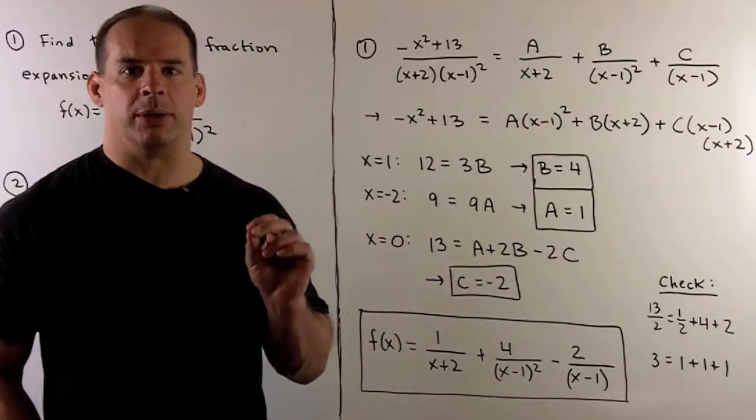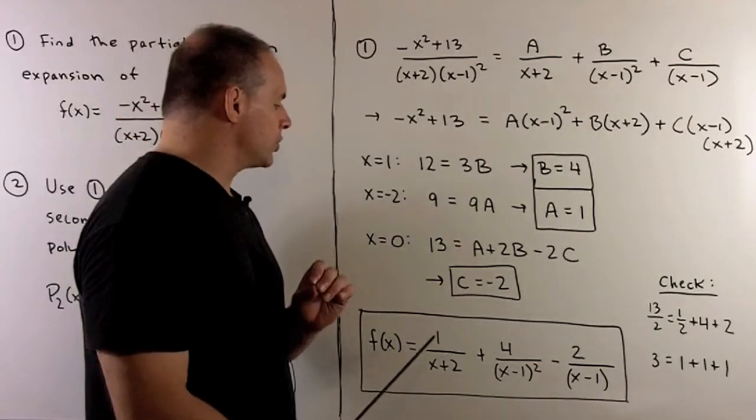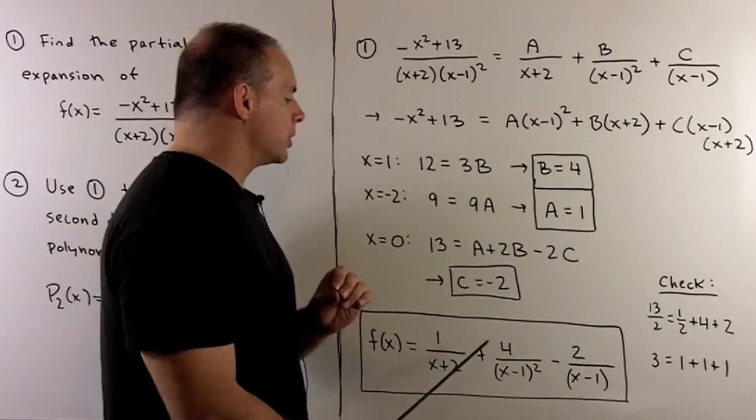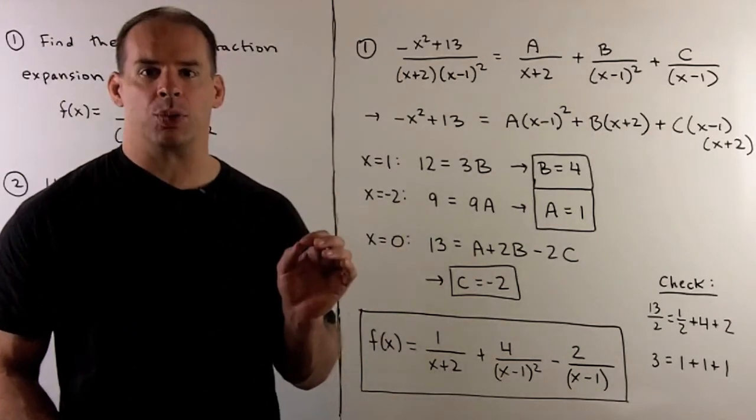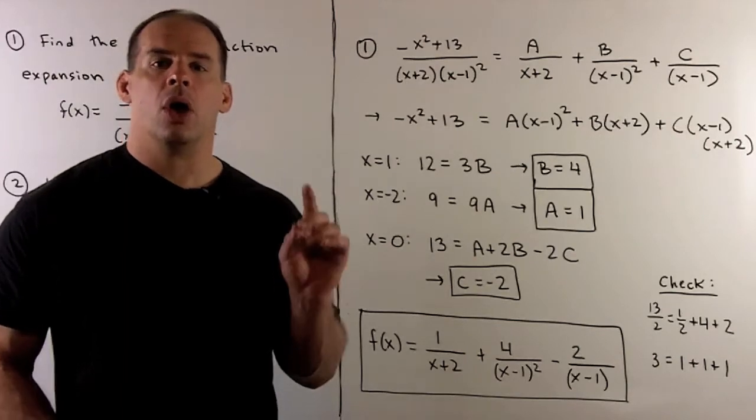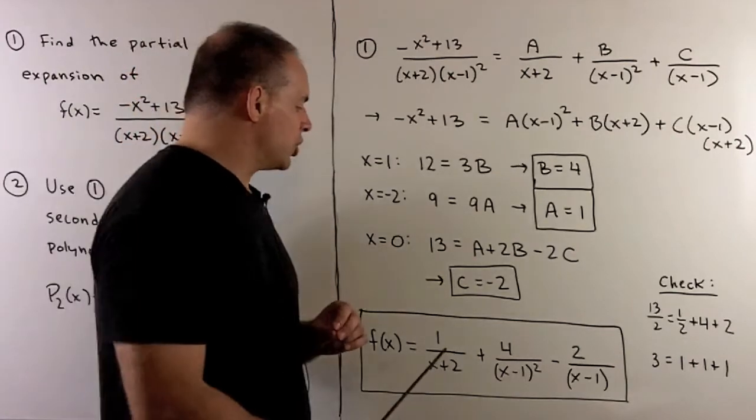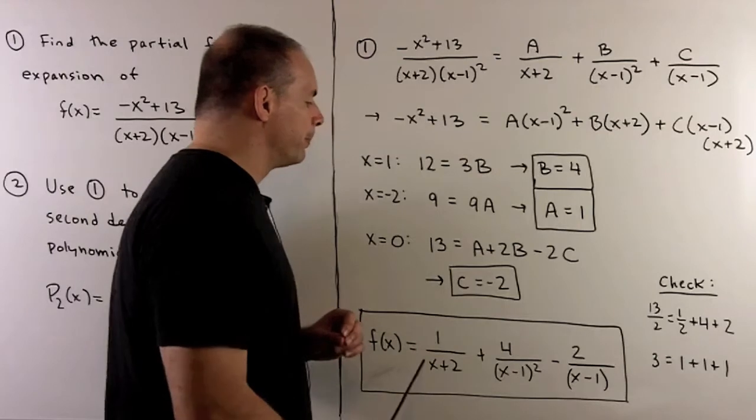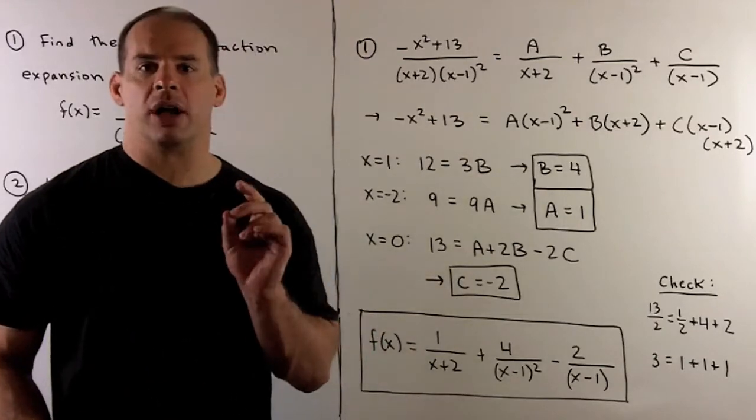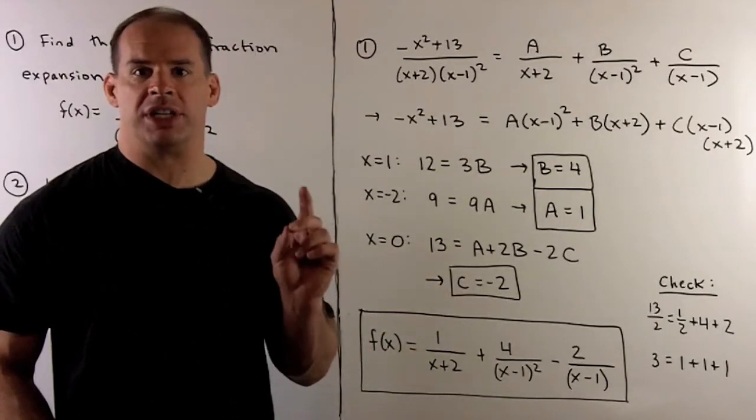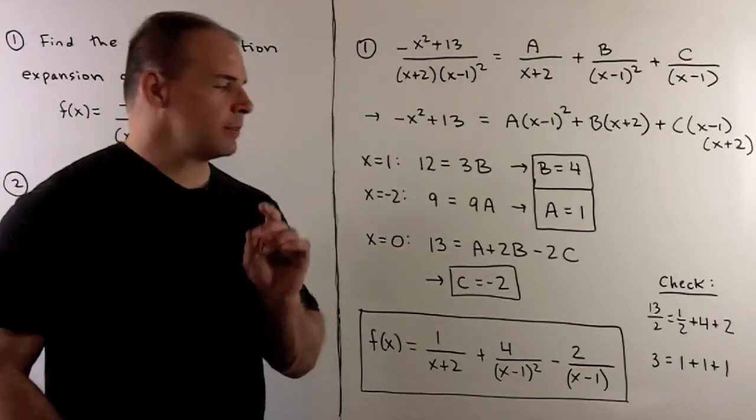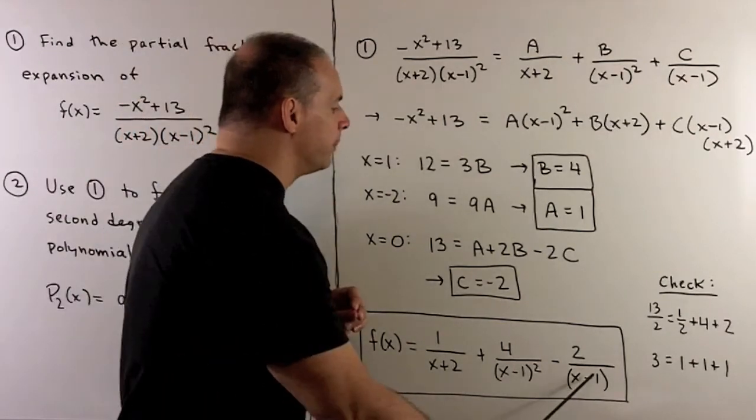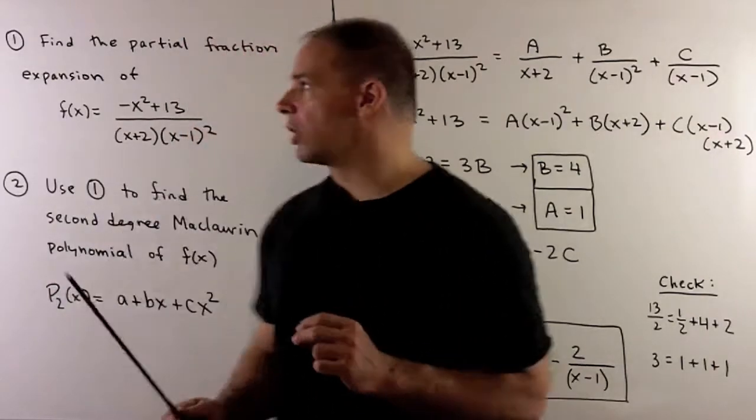So my partial fraction expansion is going to be f(x) equals 1/(x+2) + 4/(x-1)² - 2/(x-1). One way to check, we could just recombine all our terms and make sure the numerator comes out to -x² + 13. Or I could just check a few points to make sure what comes out of here is equal to what we started with.